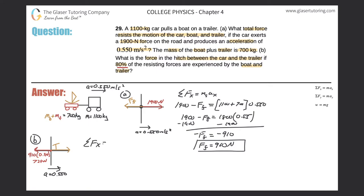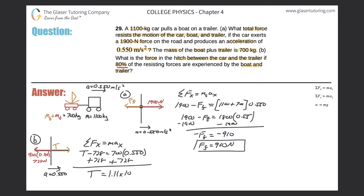Taking the sum of forces in the x-direction for the boat and trailer: T minus 728 equals 700 times 0.550. Solving: T equals 700 times 0.55 plus 728, which gives 1.11 times 10 to the third newtons. As expected, this is greater than 728, which confirms the answer makes sense.